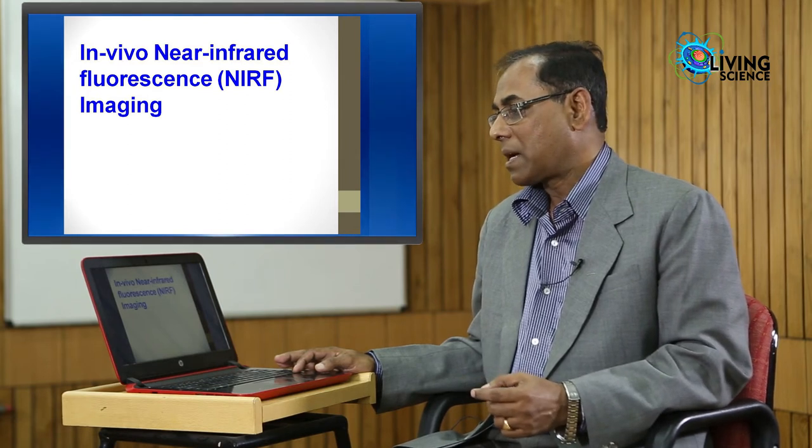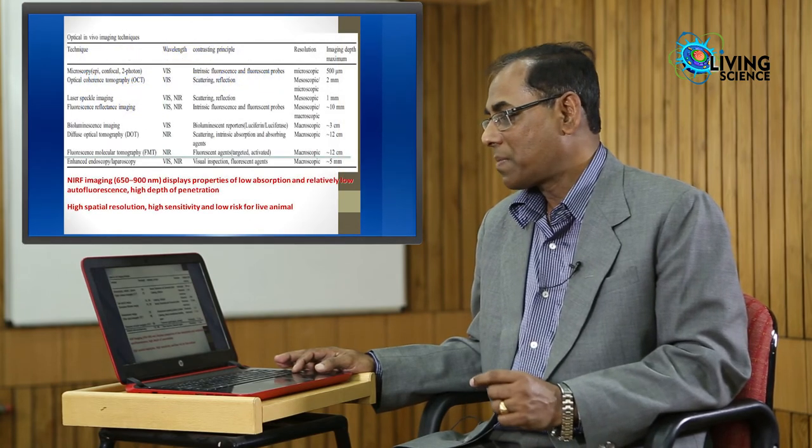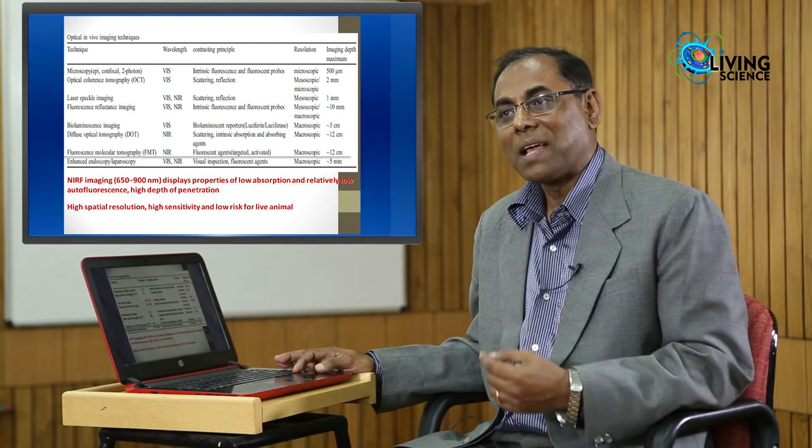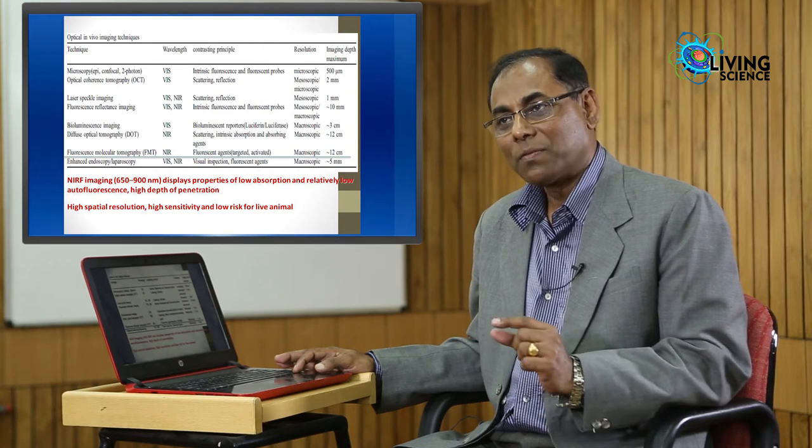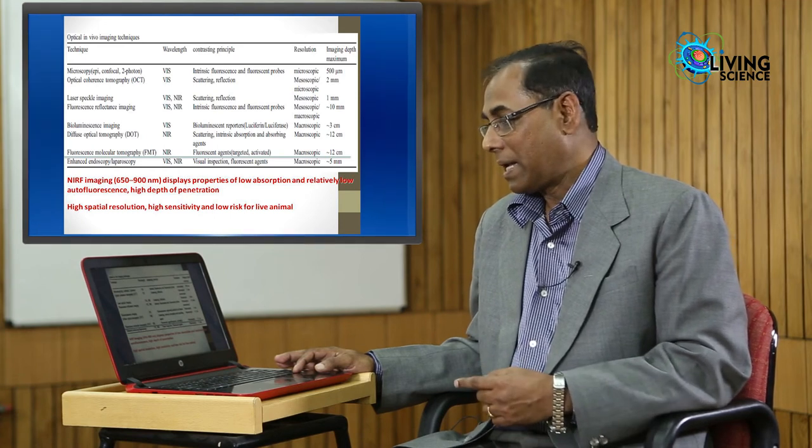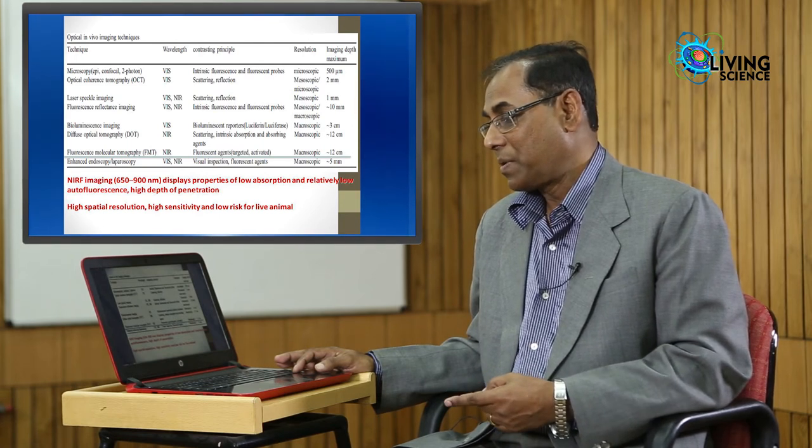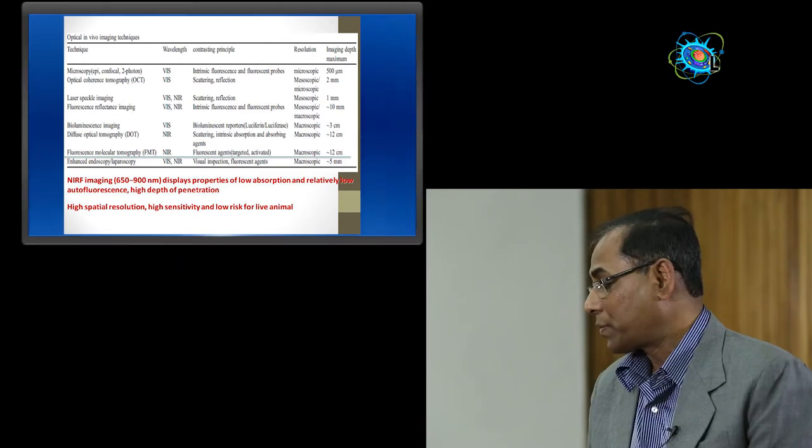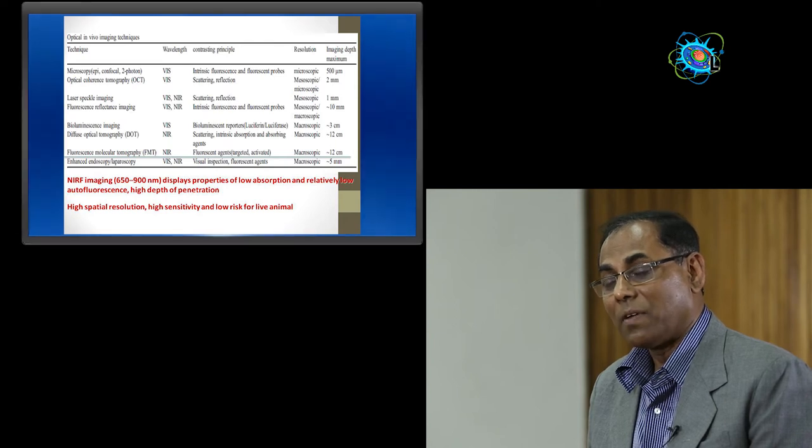Recently, another area is coming for in vivo imaging where you can use fluorescence markers. Normally, you see different fluorescence molecules are used—fluorescence angiography is done for eye problems—but the problem is that normally this fluorescence can move only a few millimeters, and usually, autofluorescence of the tissue is a huge problem. But nowadays, near-infrared range fluorescence dyes with emission and excitation ranges of 650 to 900 nanometers display properties of low absorption and can traverse almost 12 centimeters.